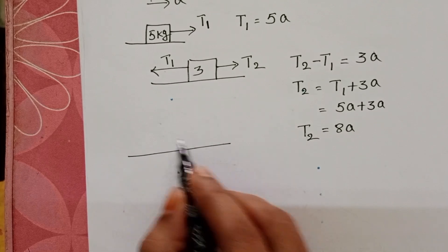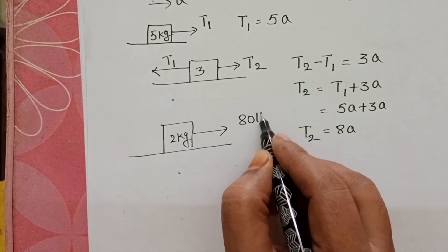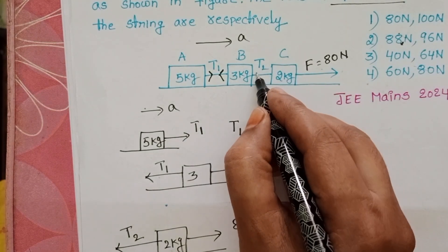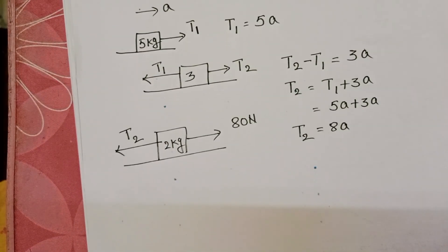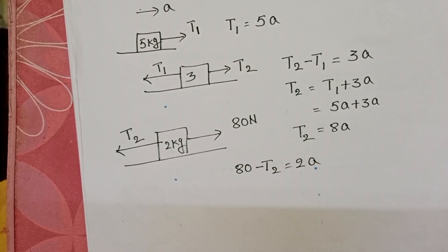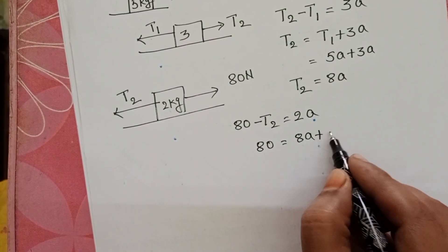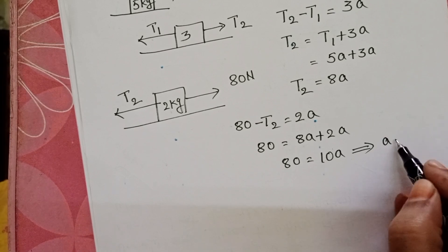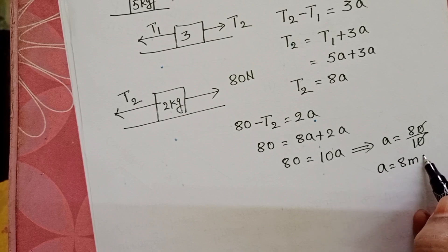Now the 2 kg block. On the 2 kg block, right side is 80 newton force, and left side is tensional force T2. Here also on 3 kg, tensional force is acting right side, and on 2 kg tensional force is in opposite direction. 80 minus T2 equals MA, 2 into A. 80 equals T2, which is 8A, plus 2A. 80 equals 10A. From this, acceleration equals 80 by 10. Acceleration equals 8 meter per second square.